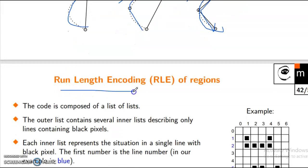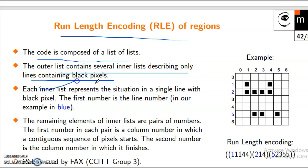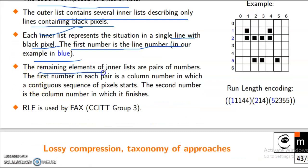The output is first composed of a list of lists. The output list contains several inner lists, describing only lines containing black pixels. Each inner list represents the situation in a single line with a black pixel. The first number is the line number in our example. The remaining elements of the inner list are pairs of numbers: the first number in each pair is the column number in which the contiguous sequence of pixels starts, and the second number is the column number in which it finishes.